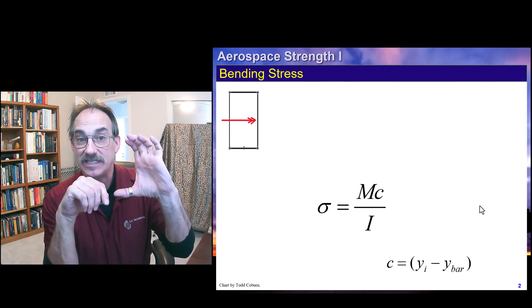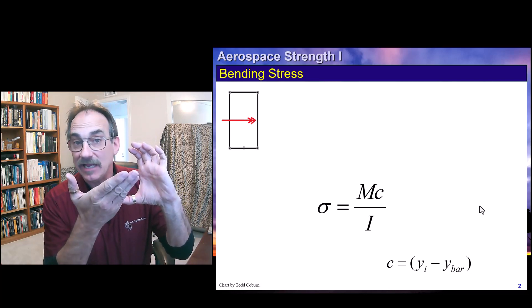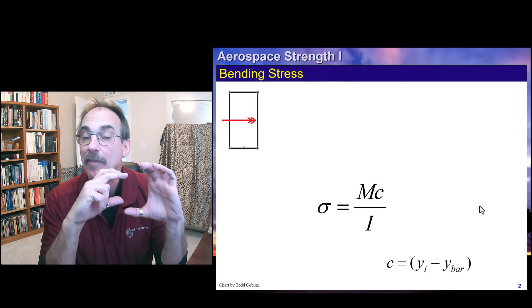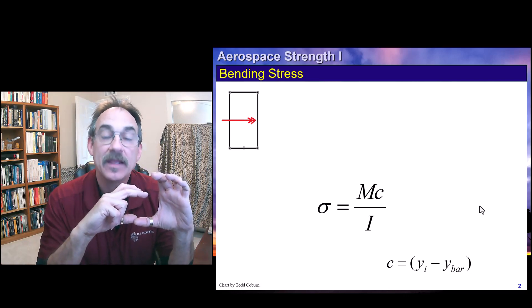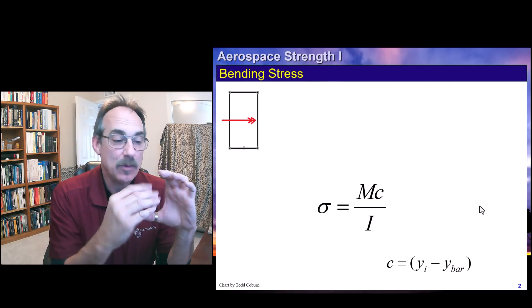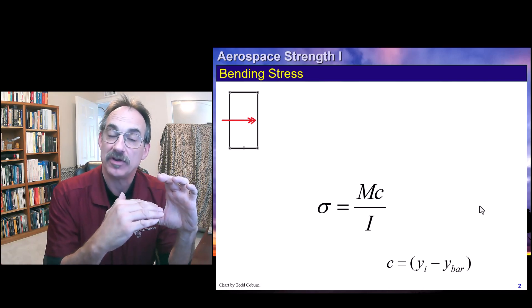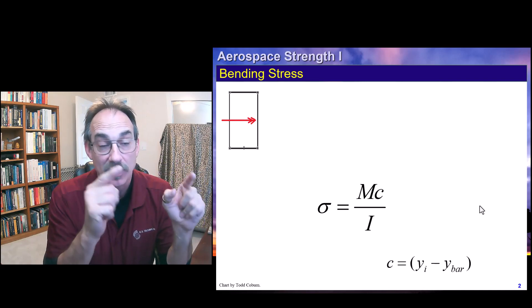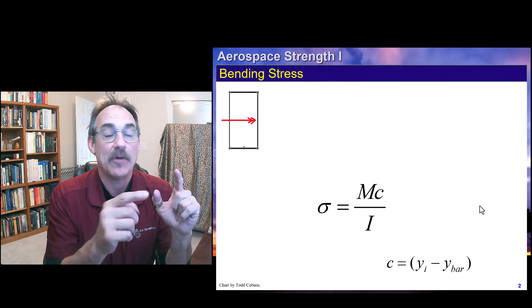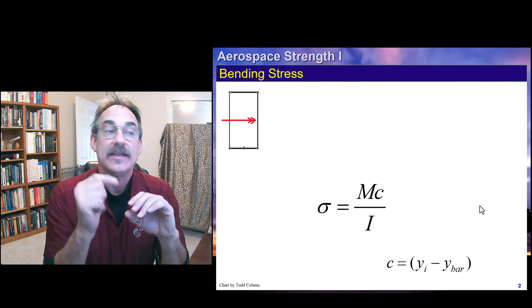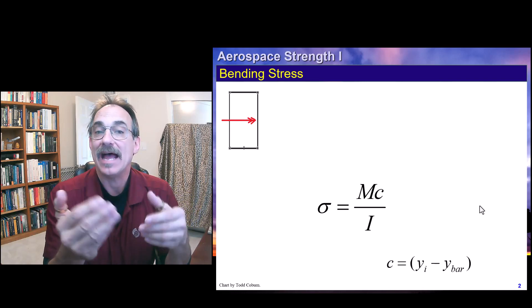So if the total section is h, and this is rectangle, therefore symmetric, therefore the y bar is h over 2, then your c would be h minus h over 2, which is just h over 2. You plug that in for c. mc over i for this right-hand rule gives you a positive stress at the top as it should be.